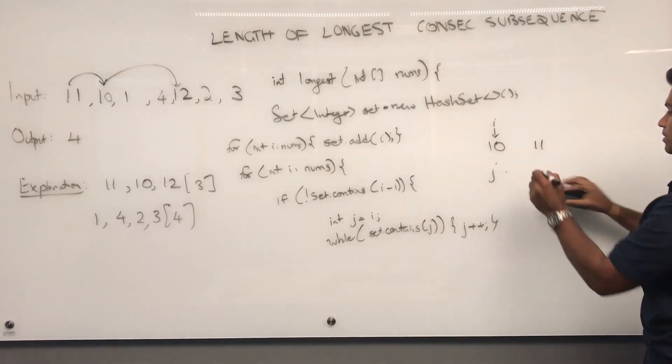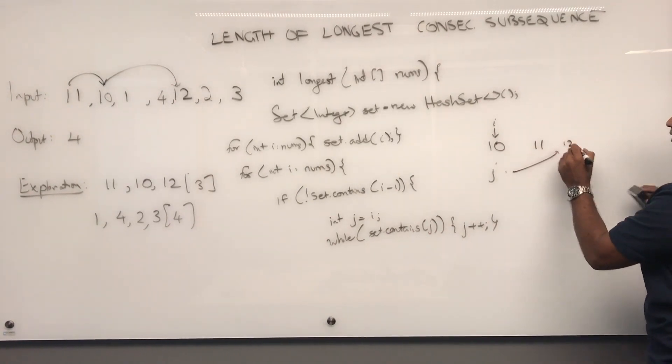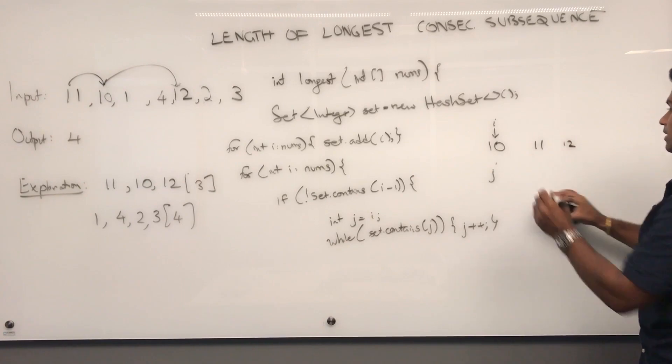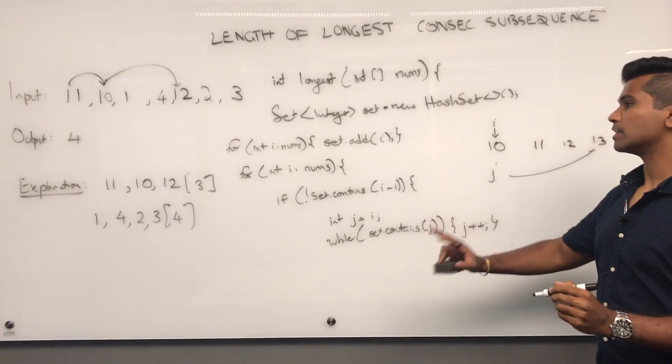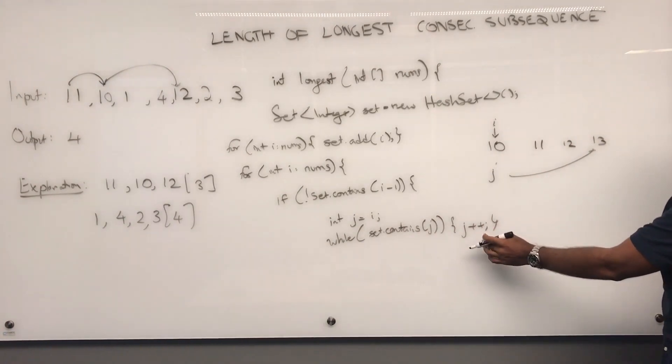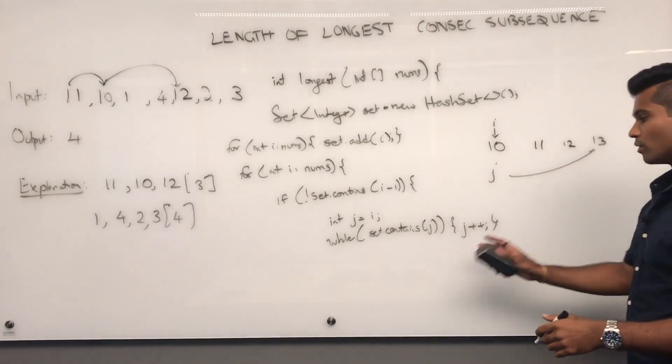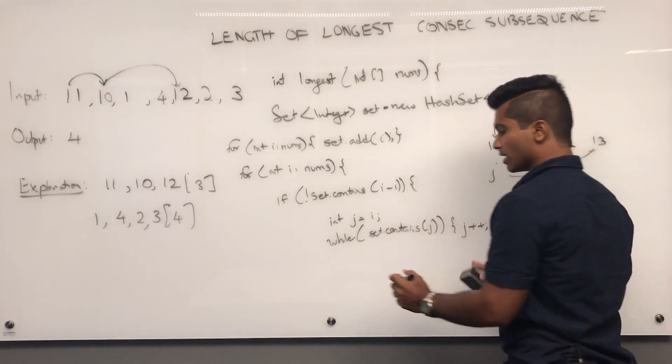Then, j plus plus, 12. 12 is contained here. Then, j plus plus again, 13. 13 is not contained here. However, j is still equal to 13. So, now, we stop incrementing j.